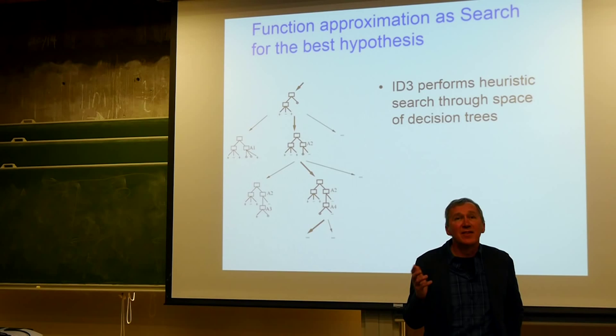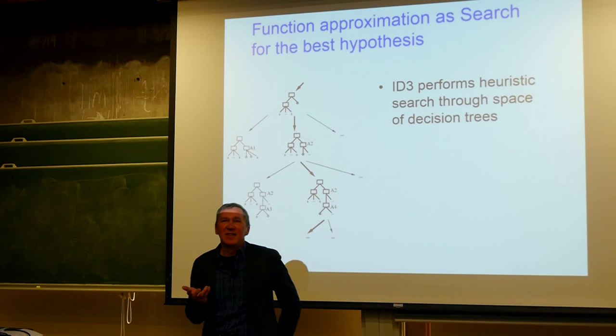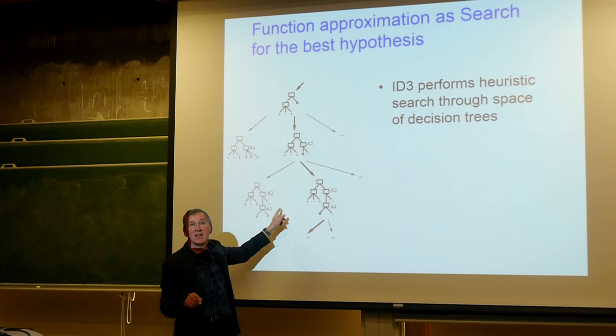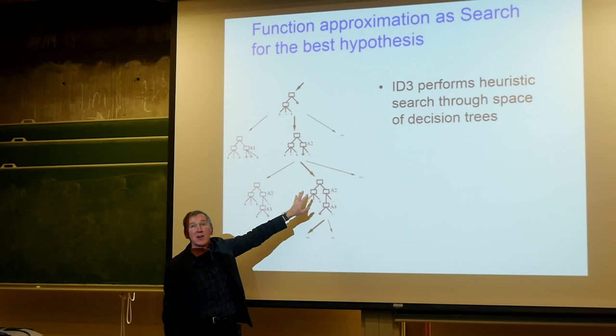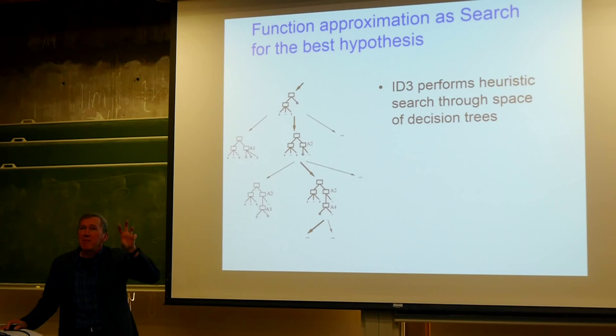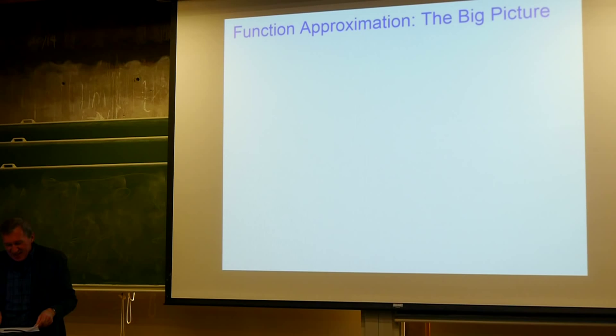This is a useful perspective on many supervised learning algorithms throughout the course. In general, we can think of many of these algorithms as performing a search through a space of possible hypotheses — each decision tree is a different hypothesis about what the target function really is. Many of these algorithms simply perform a search through the space of possible hypotheses for the best one.